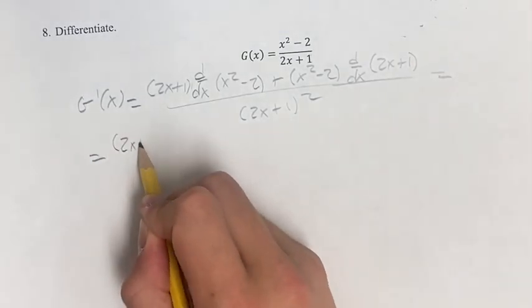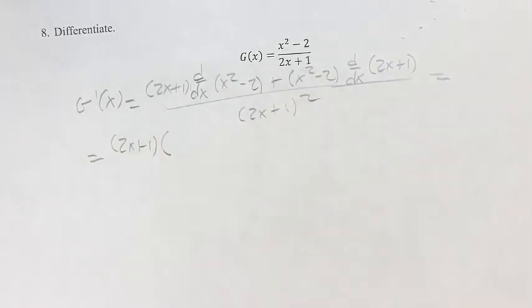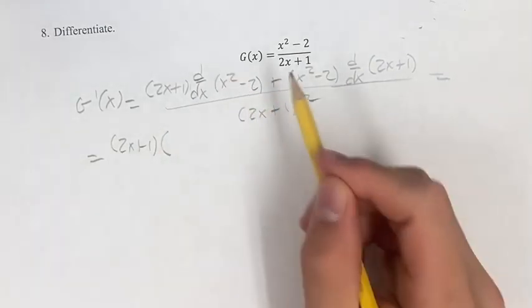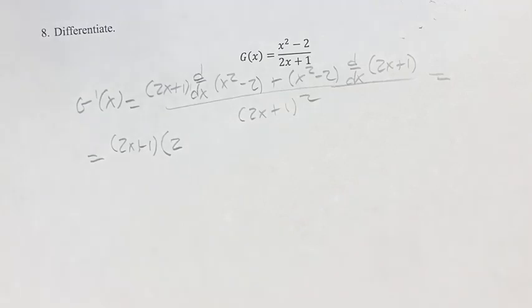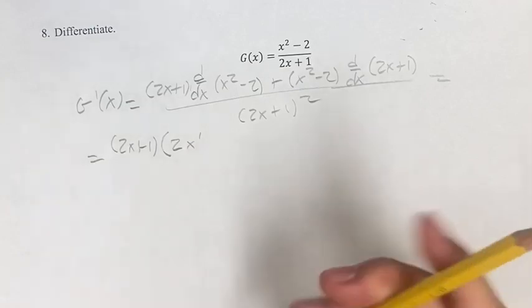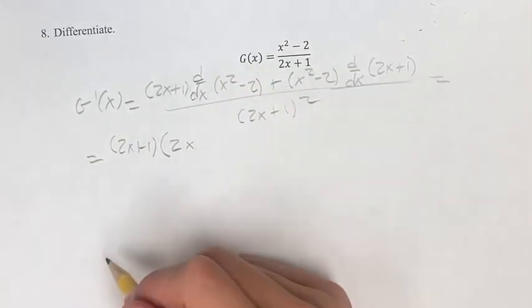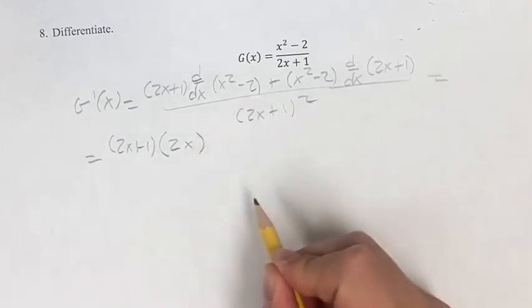We get 2x plus 1 times the derivative of this. The derivative of x squared with a power function, you bring down the exponent, subtract 1 for your new exponent, so this would be x to the first, which is just x. Minus the derivative of 2 is 0, so you can just ignore that.